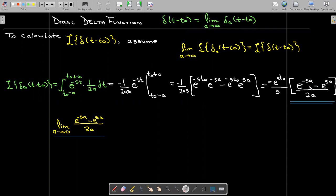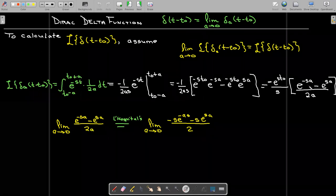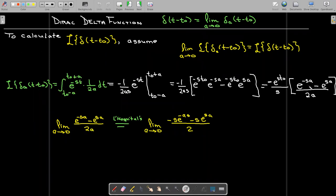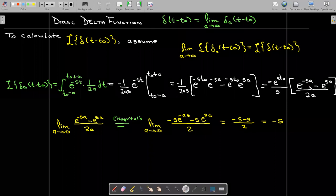And to do that we'll use L'Hopital's rule. So the derivative of the top is negative s times e to the power of negative sa minus s times e to the power of sa all over 2. And now this is a continuous function so we can just use direct substitution. We'll replace a with zero and that gives us negative s minus s all over 2. So that would be negative 2s over 2 or just simply negative s.